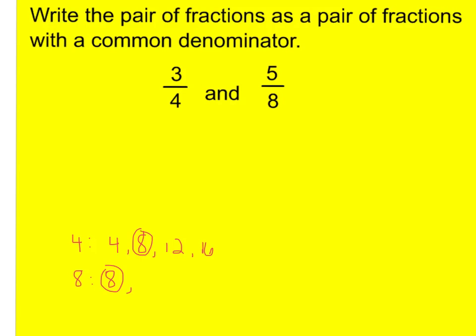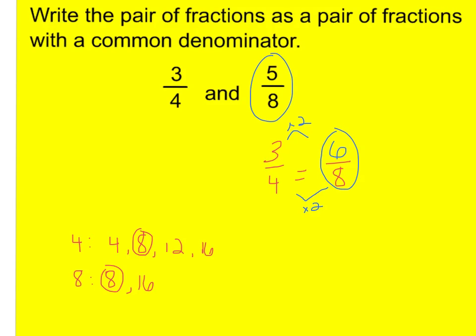I could keep going and say 16 as well, and that would be true — they'd have a common denominator, but I always like to go with the smallest. So now three-fourths will equal how many eighths? I know four times two is eight, so three times two is six. Three-fourths equals six-eighths. And five-eighths? My denominator's already eight, so I'm done. Six-eighths and five-eighths — they both have the same denominator. I met my goal.